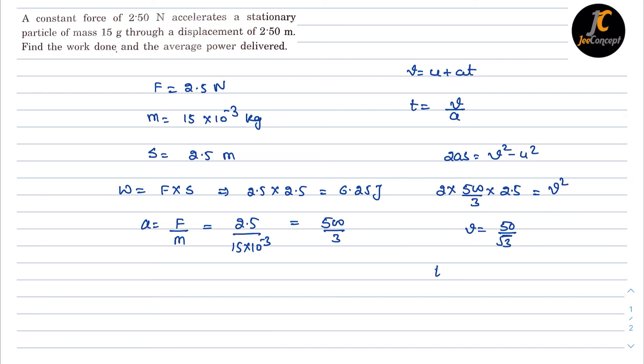And now we can get time as 50 by root 3 into acceleration is 500 by 3. So this will become 0.1732 seconds.